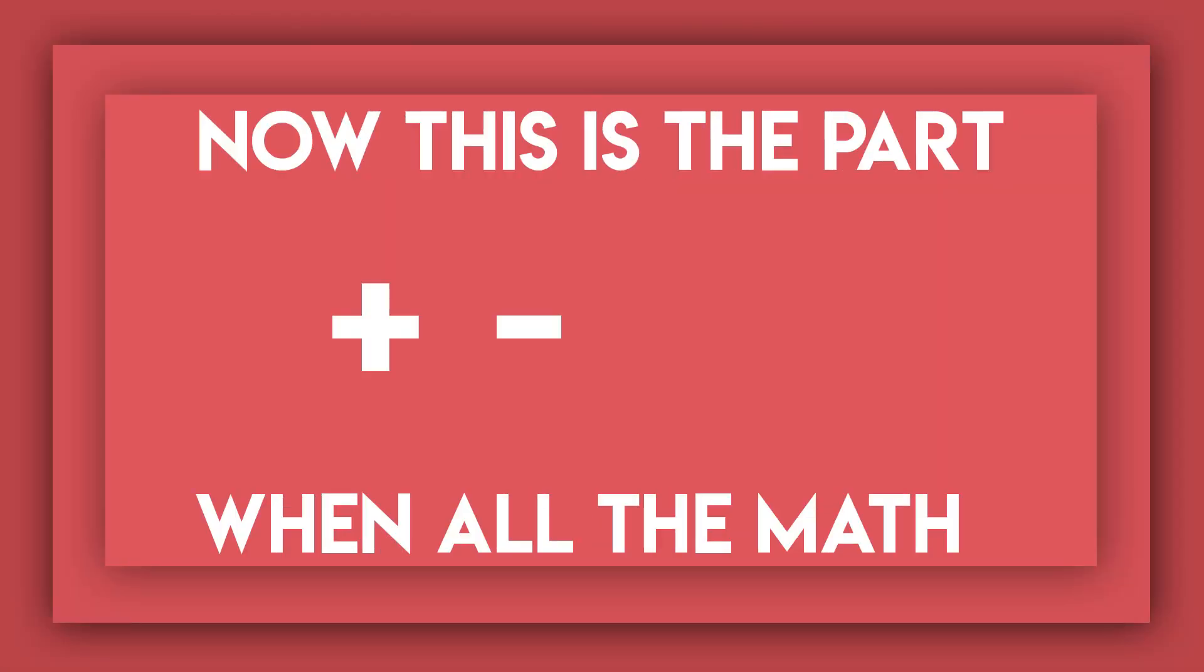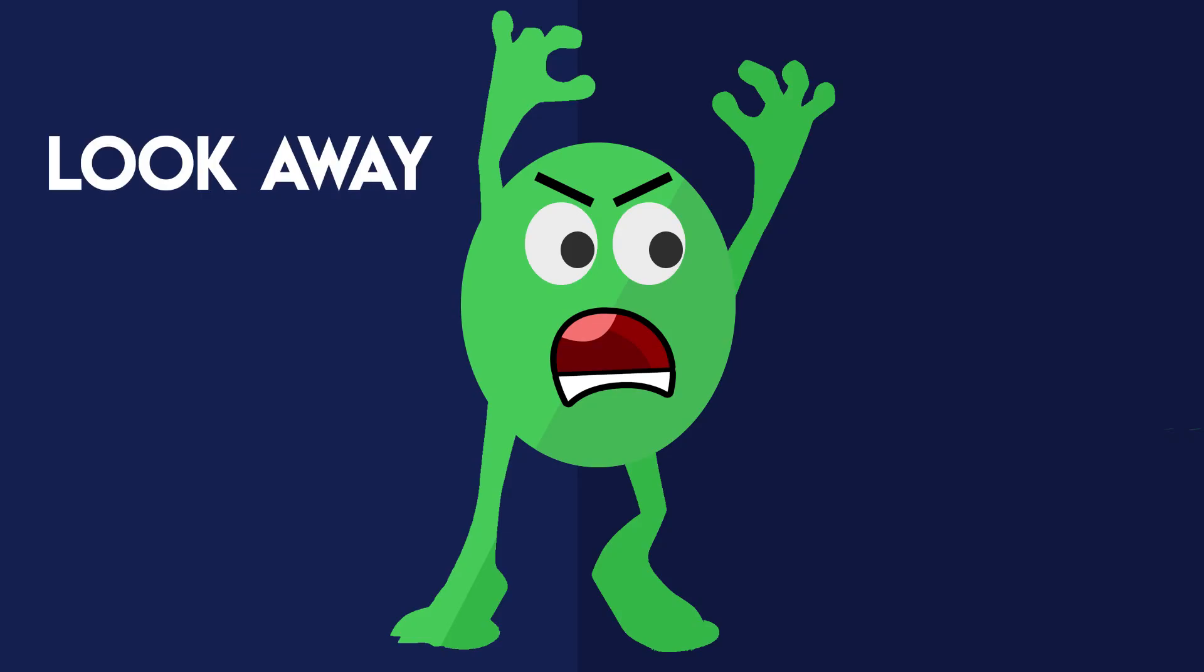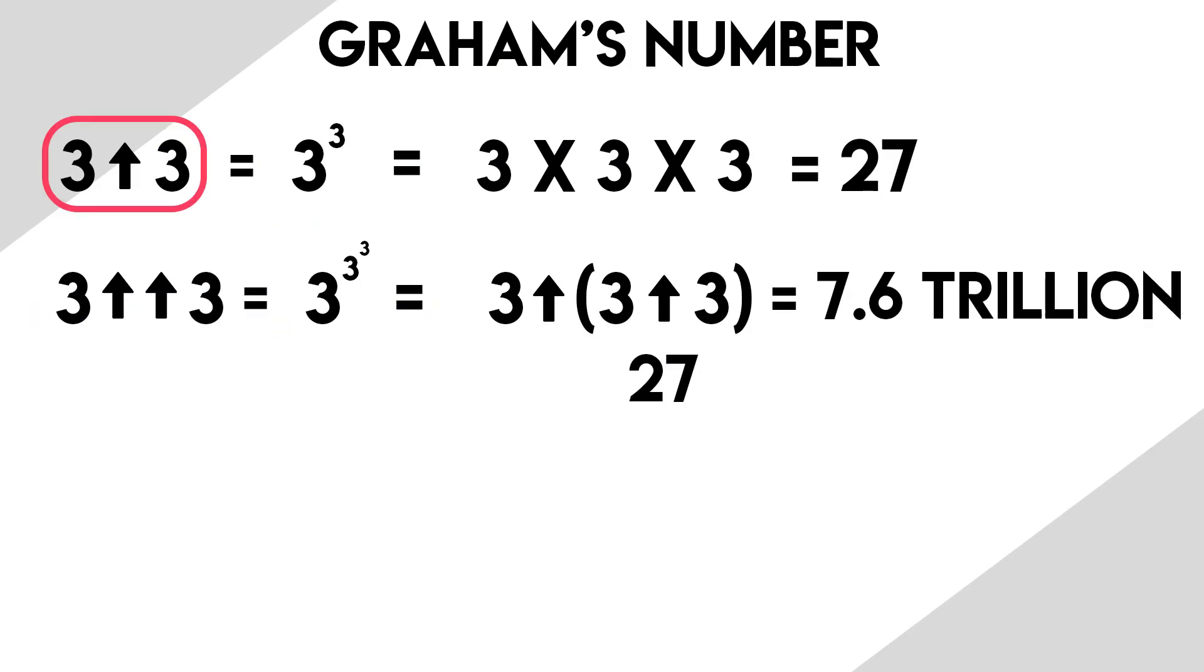Now this is the part when all the math starts getting involved, so if you don't like math, look away before I traumatize you. This right here is arrow notation, and it's just a fancy way of saying 3 to the power of 3. And that comes out to 27.